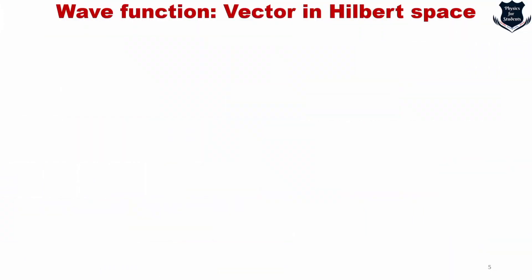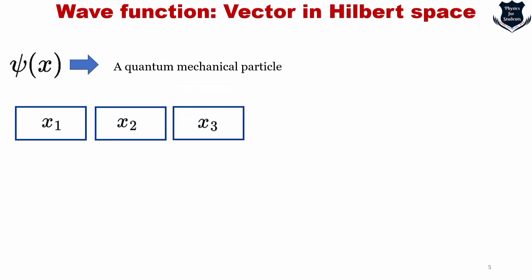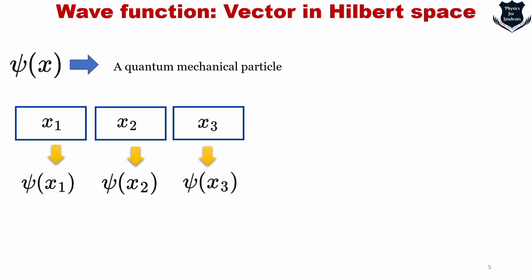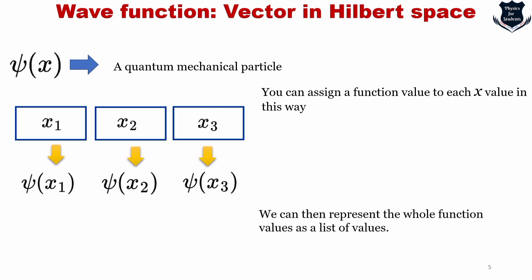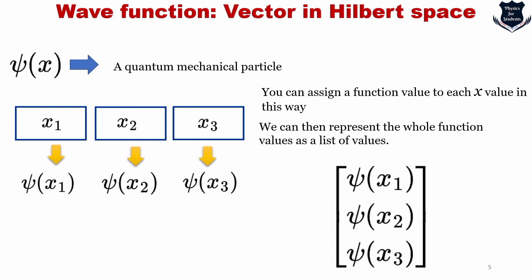Let us consider any one-dimensional wave function describing a quantum mechanical particle. The value of the wave function at locations x1, x2, and x3 is given as ψ(x1), ψ(x2), and ψ(x3). These are the function values at different locations. We can assign a function value of x to each of those locations and represent the whole list of function values as a column vector ψ, with components ψ(x1), ψ(x2), ψ(x3), and so on.